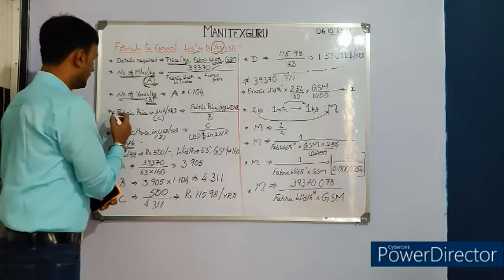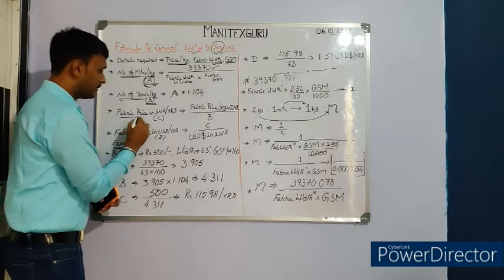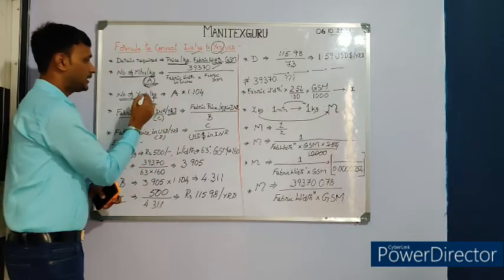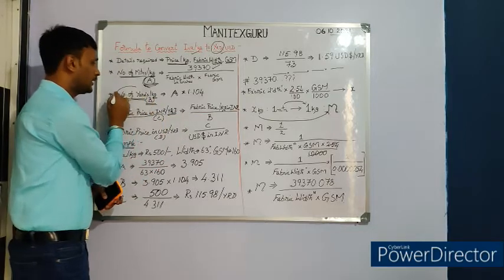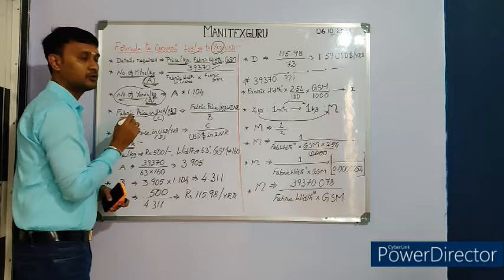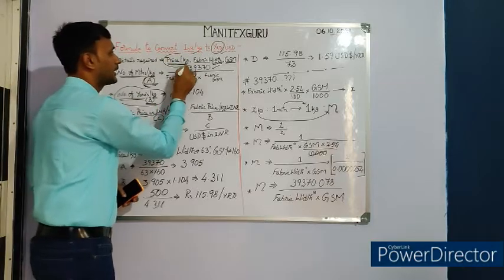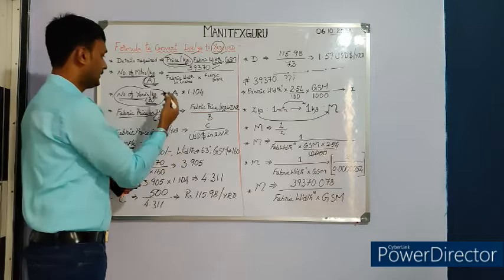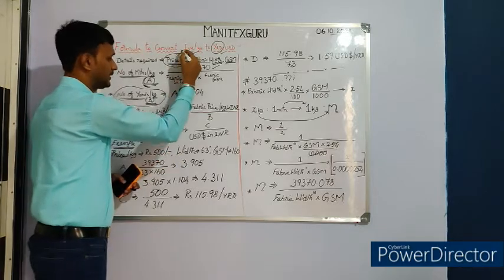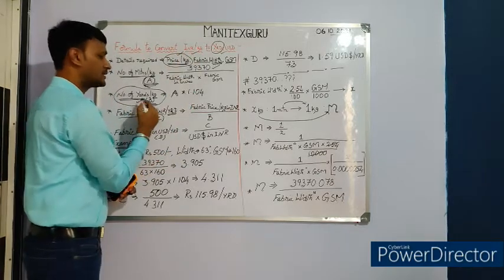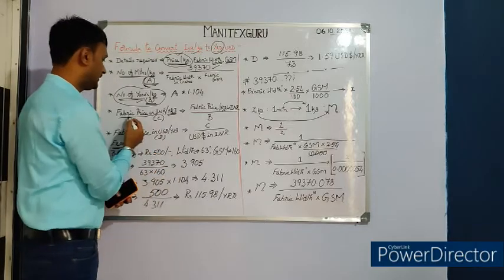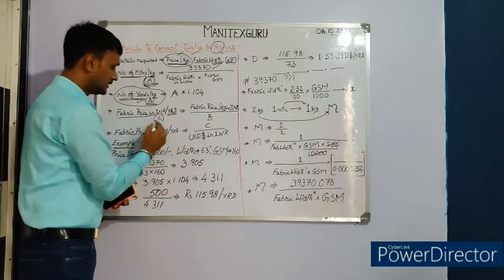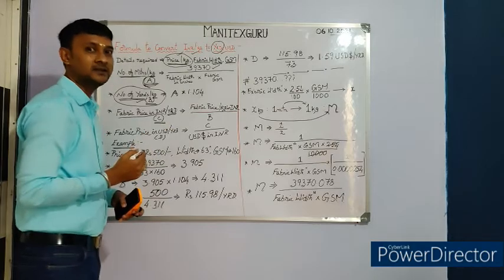Step three: fabric price in INR per yard, noted as C. In step two we got the number of yards per kg, and we already have the fabric price per kg. By dividing the fabric price per kg by the number of yards per kg, we get the fabric price in Indian rupees per yard.